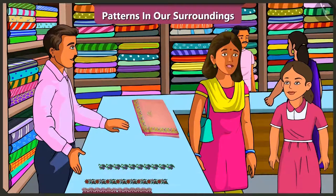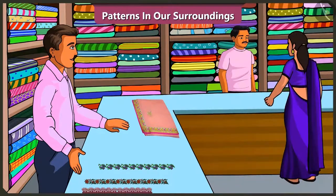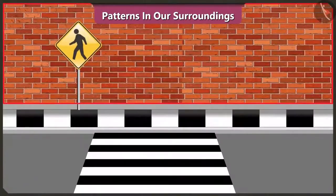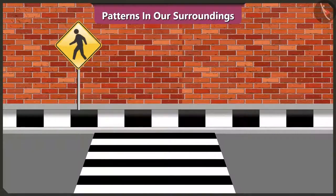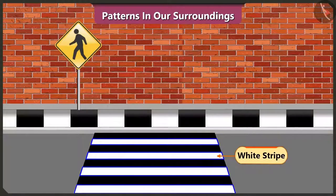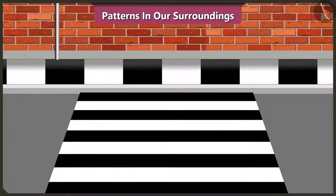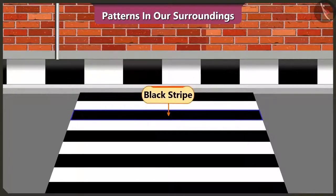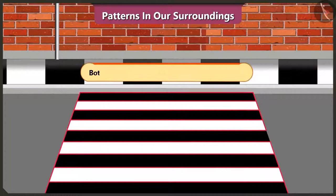Vinny, let us go. Yes, let's go. Vinny, look at this wall. This wall has a pattern made of bricks. Oh yes. Now look, this zebra crossing has a pattern of black and white stripes. Yes, this pattern has black, white, black, white lines. Both black and white color lines have been used repeatedly.